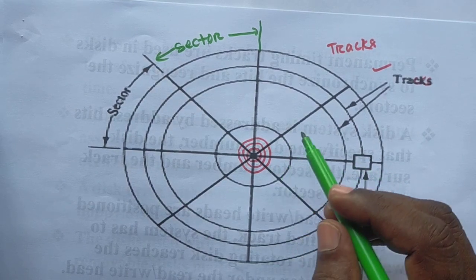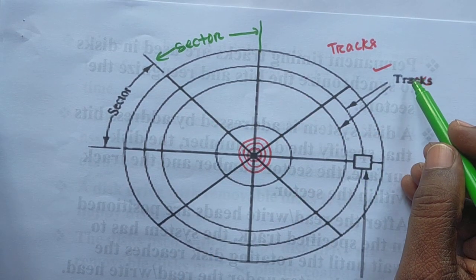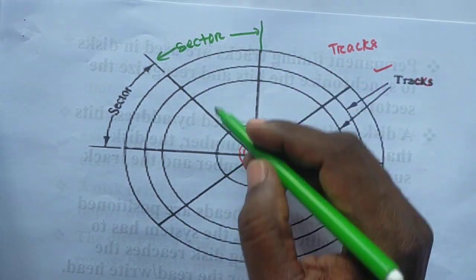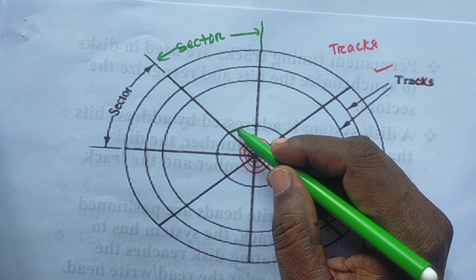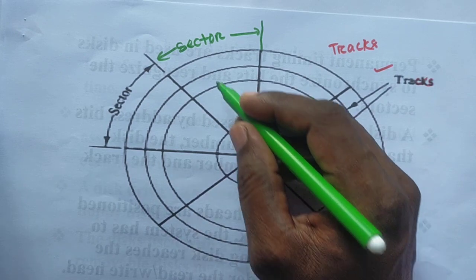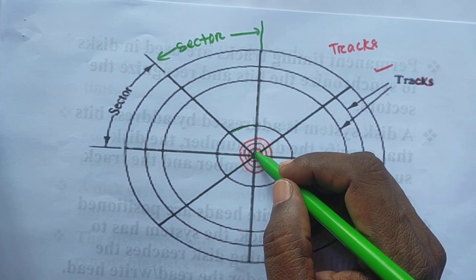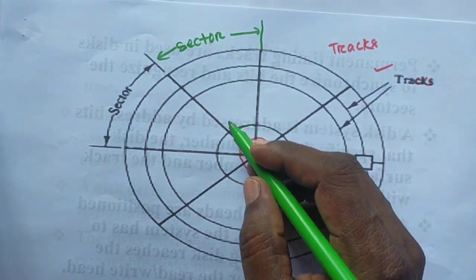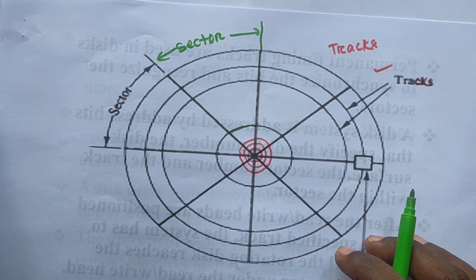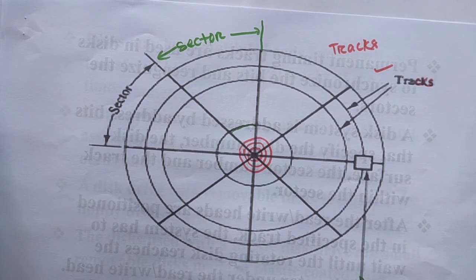So here we see two kinds of things: the number of circles (tracks), and each track contains a number of sections (sectors). The sector size increases based on the distance from the center point outward — the larger the sector, the more data it can hold accordingly.